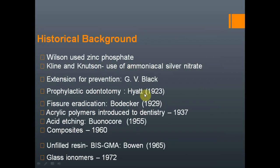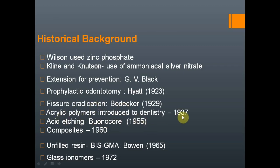Historically, Wilson first used zinc phosphate for filling caries, then ammoniacal silver nitrate was used. Extension for prevention was introduced by G.V. Black, followed by prophylactic odontotomy and fissure eradication by Hyatt. Polymer sealants were introduced in 1937. Acid etching and BIS-GMA composites were introduced in the 1960s. BIS-GMA was introduced by Bowen in 1965, and glass ionomer cement — a landmark change in restorative dentistry — was introduced in 1972.